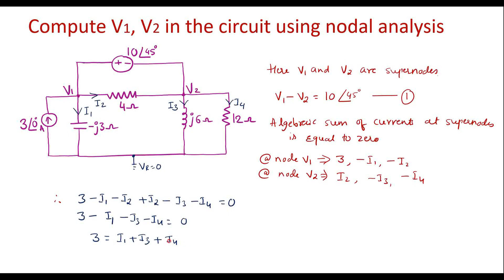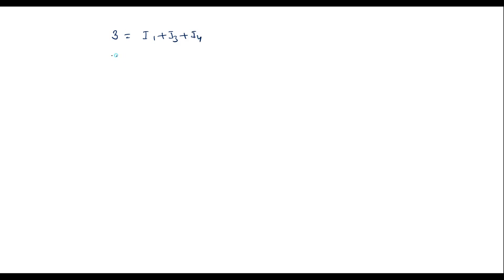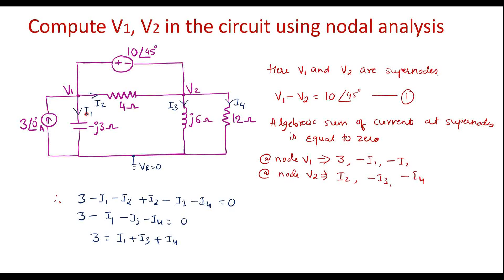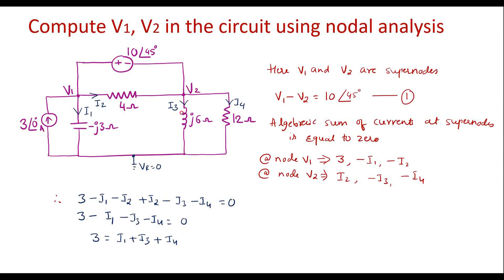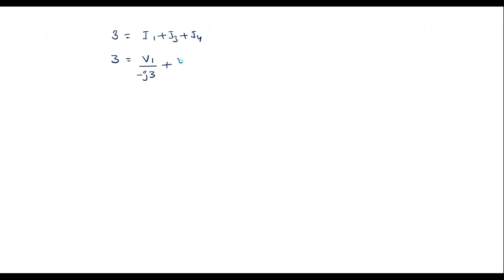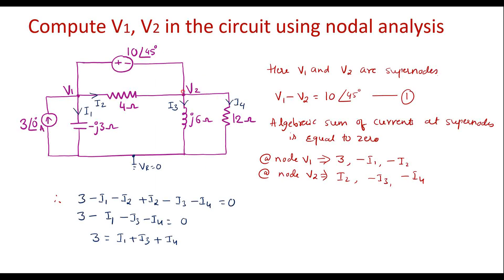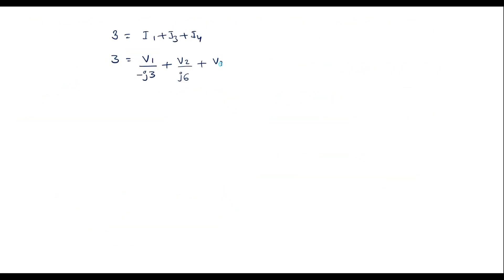Now we need to express all branch currents in terms of node voltages. So: 3 equals I1 plus I3 plus I4. I1 is the current flowing from V1 towards the reference node, so I1 equals V1 divided by minus j3. I3 is the current flowing from V2 towards the reference node, so I3 equals V2 divided by j6. Similarly, I4 is the current flowing from V2 towards the reference node, so I4 equals V2 divided by 12.